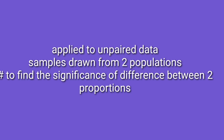This test is applied to unpaired data of independent observations. Two groups of samples are sampled and it is done to test if the difference between the means is real or as a result of sampling variability.